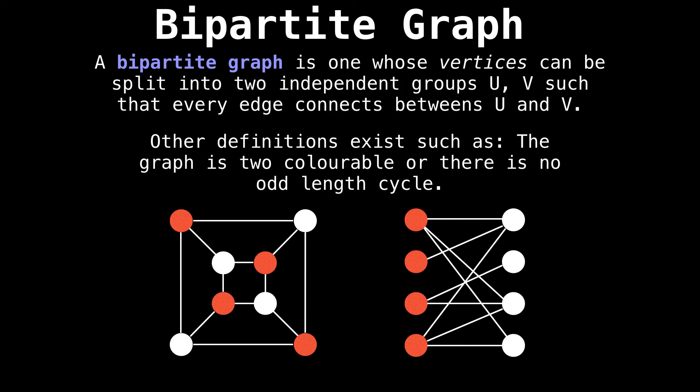This next type of special graph is a bipartite graph. It is one whose vertices can be split into two independent groups, U and V, such that every edge connects between U and V. This is just a fancy way of saying that the graph is two-colorable or that there are no odd length cycles in the graph. Often a problem we'd like to ask is what is the maximum matching we can create on a bipartite graph? Suppose white nodes are jobs and red nodes are people, then we can ask how many people can be matched to jobs.